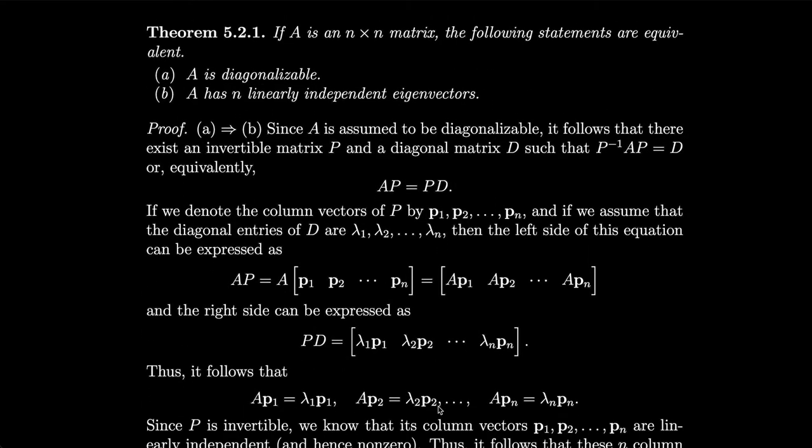We have a theorem for diagonalization. If A is an n by n matrix, the following statements are equivalent: A is diagonalizable, and A has n linearly independent eigenvectors. Let's prove this. First, the proof that if A is true then B has to be true — A implies B. Since A is assumed to be diagonalizable, we're going to prove that it must have n linearly independent eigenvectors.